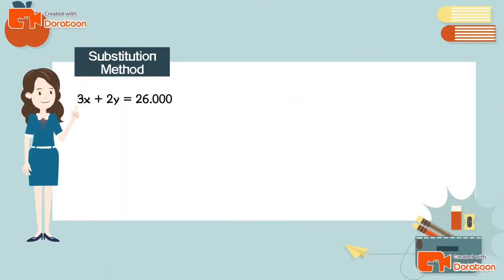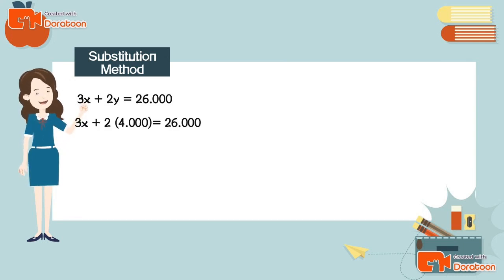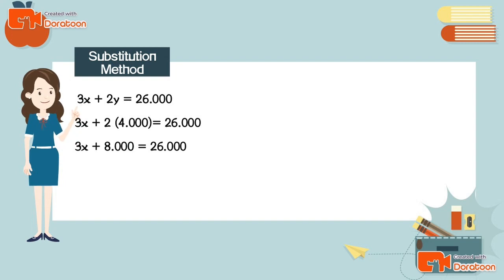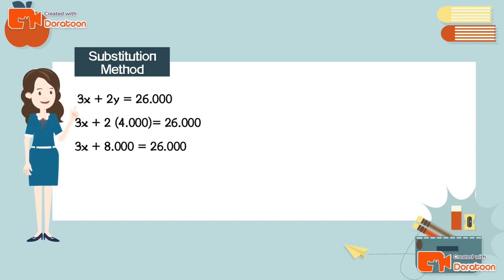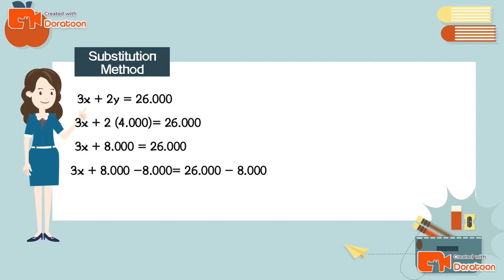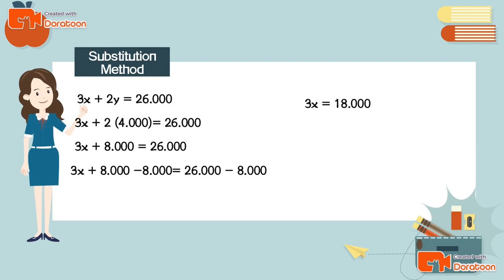The third step: substitute y = 4,000 into the first equation. We get 3x + 2 × 4,000 = 26,000, which is 3x + 8,000 = 26,000. Subtracting 8,000 from both sides: 3x = 26,000 − 8,000 = 18,000.